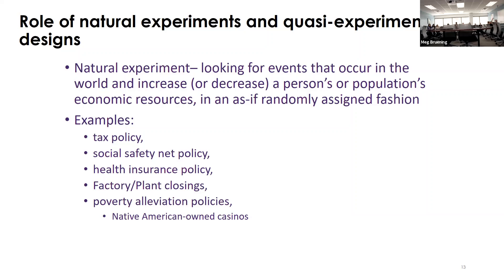You leverage things that are already happening and make an argument that it's as close to random as possible — a non-agenic thing that happened. These opportunities are few and far between, so we often pair something that's almost random with methods that control for unmeasured confounding at least at baseline. For instance, in Brazil, tenants on land were randomly designated as owners by the government, creating an arguably random situation to study how land ownership affects life chances.